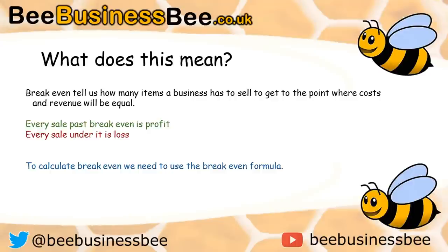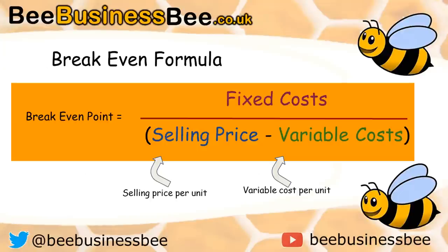To calculate breakeven we need to use the following breakeven formula. Breakeven is calculated by doing the fixed costs divided by the selling price minus the variable costs. The part in brackets has to be done first, and that's sometimes called the contribution, because it's working out how much profit per item is going to contribute towards your fixed costs. Note that it's the selling price per unit and the variable cost per unit, so if you're given a grand total you need to divide by how many are sold.